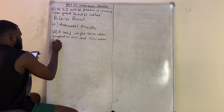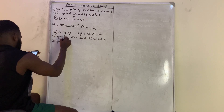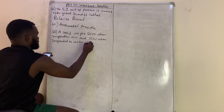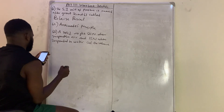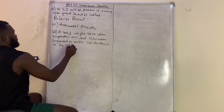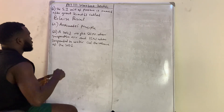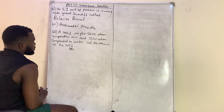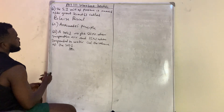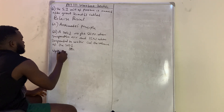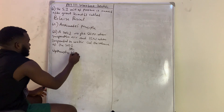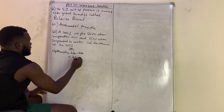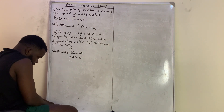According to Archimedes' principle, the upthrust equals the weight in air minus the weight in water. So the upthrust is 21 minus 15, which gives 6 newtons.